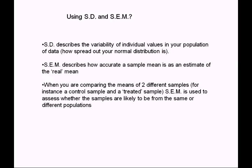We now have two measures: the standard deviation, which describes the spread of all individual data, and the standard error of the mean, which describes the distribution of sample means of size n — so the larger n is, the smaller the standard error. Which one we use depends on our goal: use standard deviation to describe the spread of individual data, and standard error when assessing how accurately a sample mean reflects the population mean, or when comparing sample means.